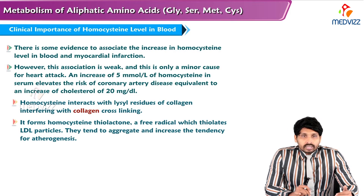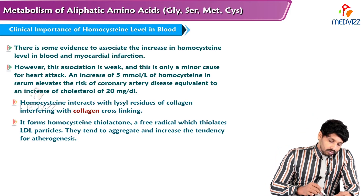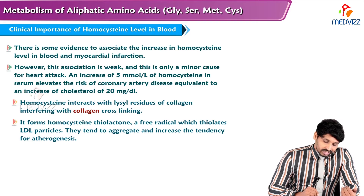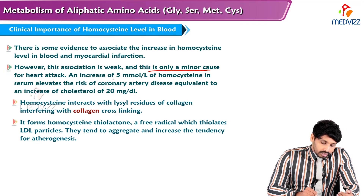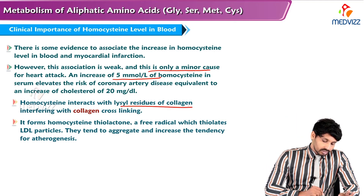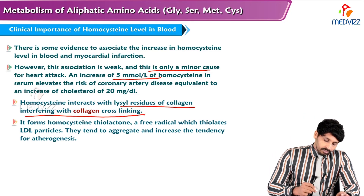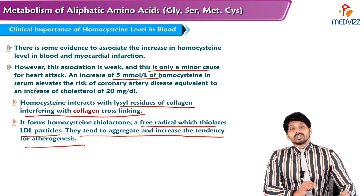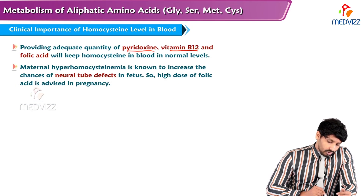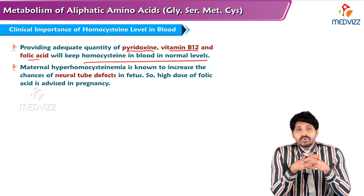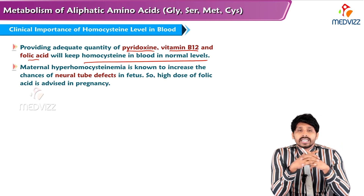Regarding the clinical importance of homocysteine: there is evidence associating increased homocysteine in the blood with myocardial infarction, though the association is considered a minor cause of heart attack. An increase of 5 millimoles per liter of homocysteine elevates the risk of coronary artery disease equivalent to a cholesterol increase of 20 milligrams per deciliter. Homocysteine interacts with lysine residues of collagen, interfering with collagen crosslinks of arterial walls, and forms homocysteine thiolactone, a free radical that thiolates LDL particles, increasing the tendency of atherogenesis. Adequate pyridoxin, vitamin B12, and folic acid keeps homocysteine at normal levels. Maternal hyperhomocysteinemia increases the chances of neural tube defects in the fetus, so high-dose folic acid is advised during pregnancy.